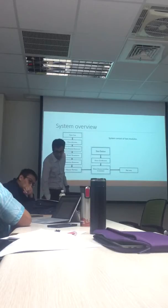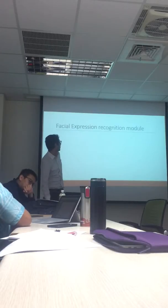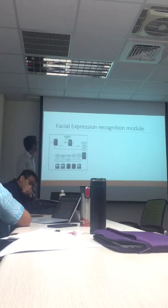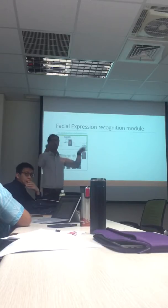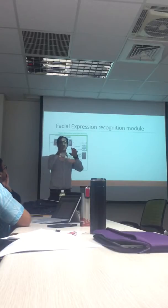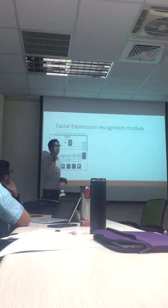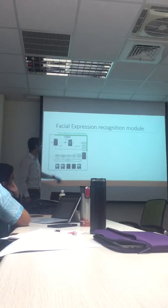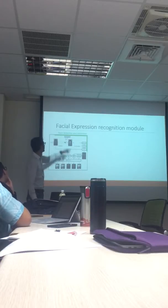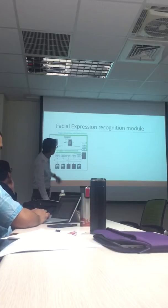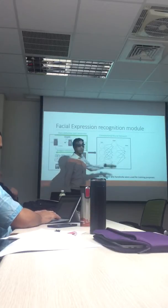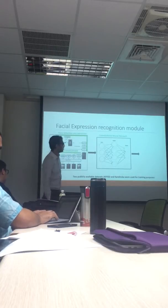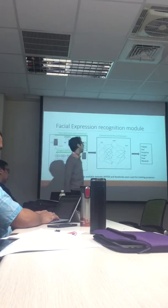How does the facial expression recognition module work? First, we detect a face from the camera feed and extract it from the environment. From the detected faces we extract features, and through those features we extract the emotion. After image enhancement, the images are passed through a convolutional neural network which gives us the features, and a trained model identifies the emotions.